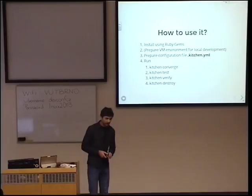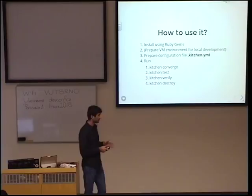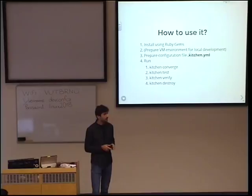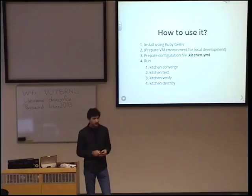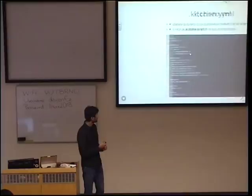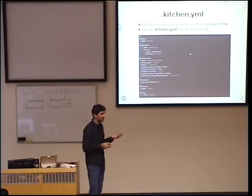So how does Test Kitchen actually work? You install it using RubyGems — it's easy. Then you can prepare your local VM configuration, because if you want to test locally you need something like Vagrant. And then you will configure the main configuration file, which is kitchen.yaml. This file needs to be inside the root of your repository — preferably a Git repository.